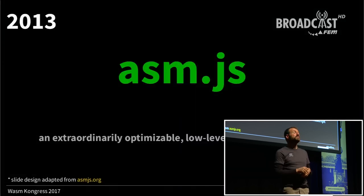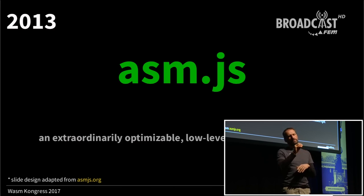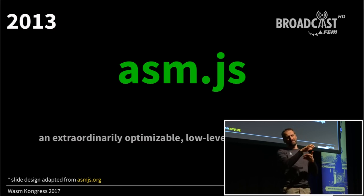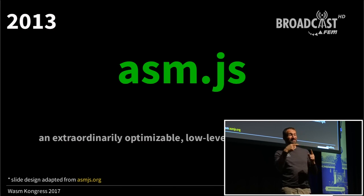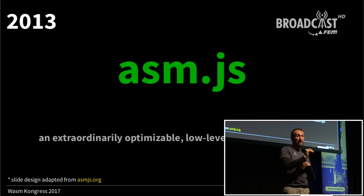People thought about how they could simplify and optimize that so it could run as fast as natively written JavaScript, and that's how we got asm.js. Asm.js started as a project sponsored by Mozilla, intended to standardize a low-level subset of JavaScript with certain features that would enable engines to run code as fast as possible — a compile target for other languages.